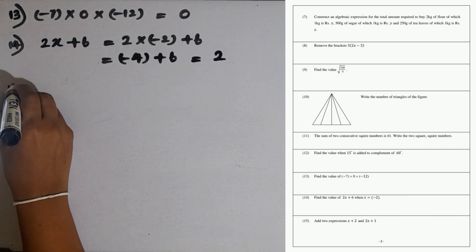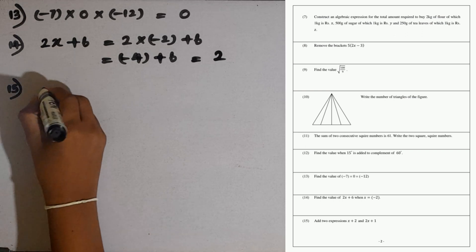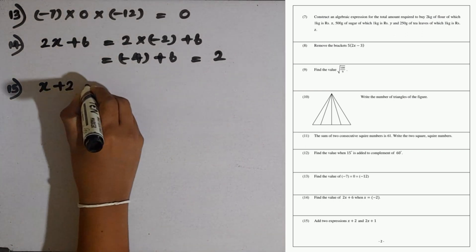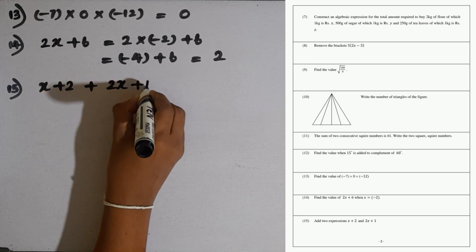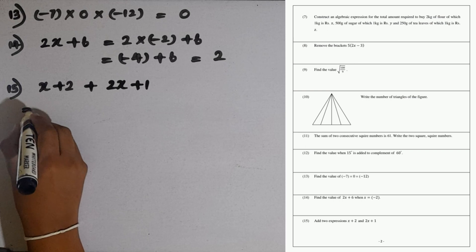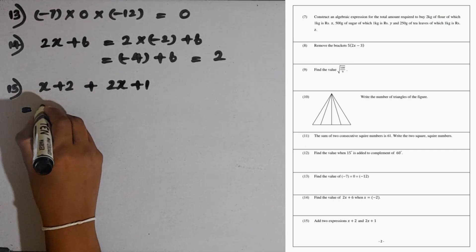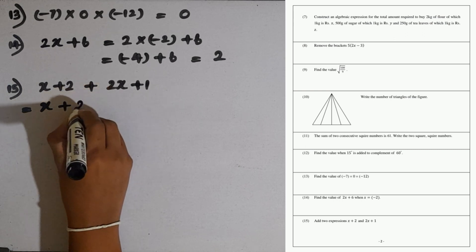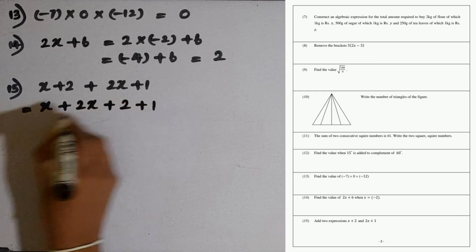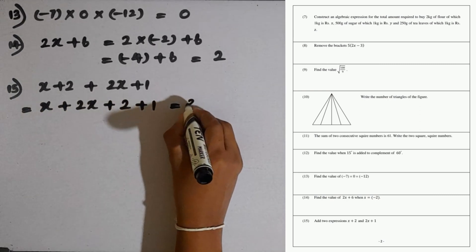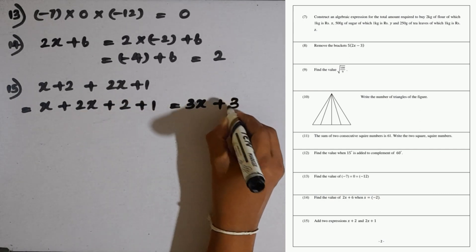Question number 15: add two expressions x plus 2 and 2x plus 1. We can take the like terms together here and the numerical values together. x plus 2x plus 2 plus 1. Here x plus 2x is 3x, then 2 plus 1 is 3. So this is the answer.